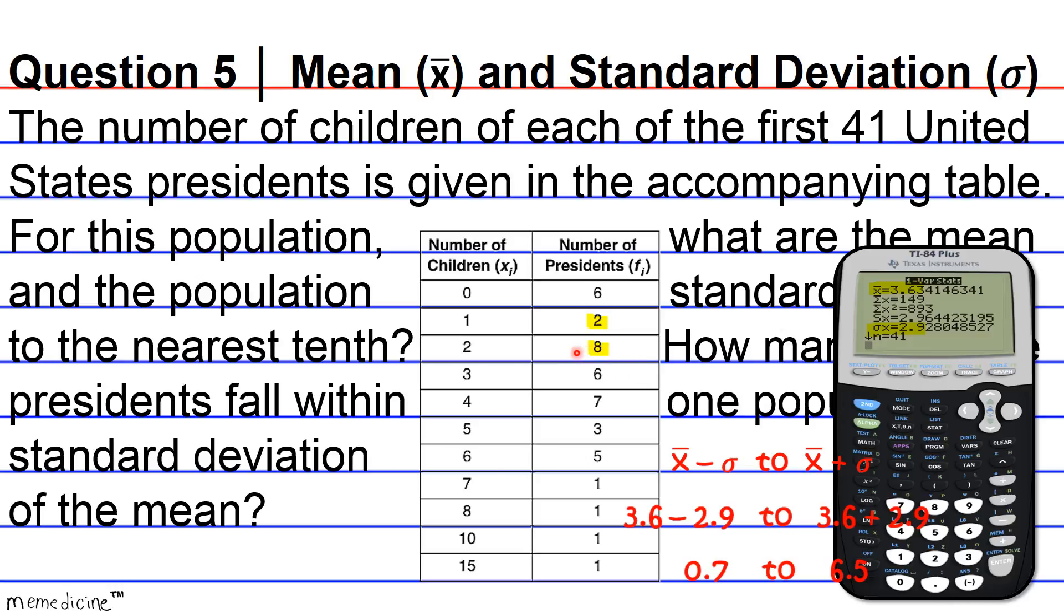We see that the number of presidents for 1 child is 2. And then we're going to go all the way up to 6. 8 is a frequency for 2 children. And remember, we're going all the way down to 6. So we have to add 6 to that, 2 plus 8. That's like 10. Plus 6 is 16. Plus 7 is 23. Plus another 3 is going to be 26. Plus 5 is going to give you a total of 31. So we have that 31 presidents fall within one standard deviation of the mean.